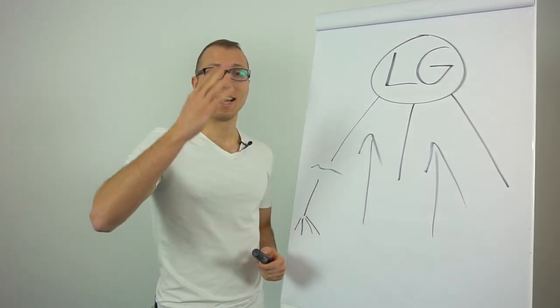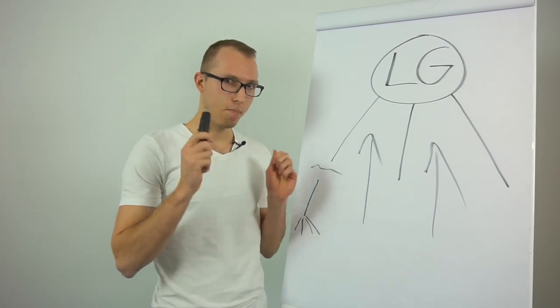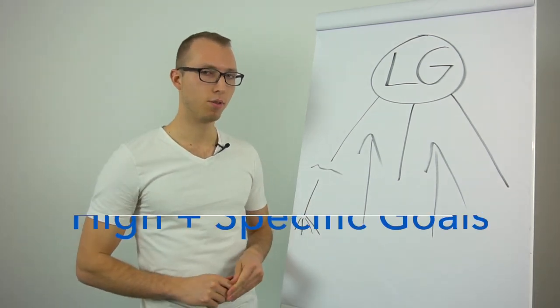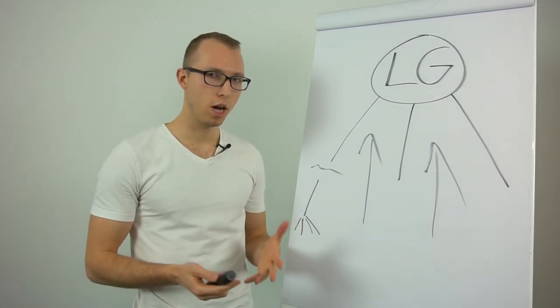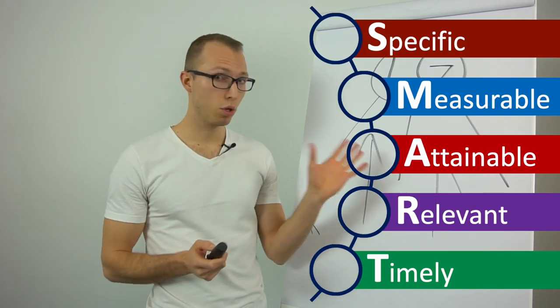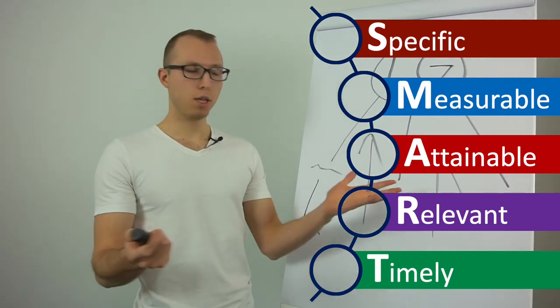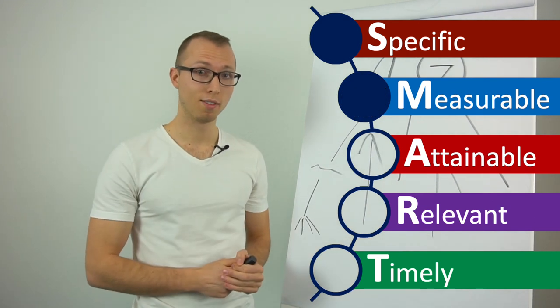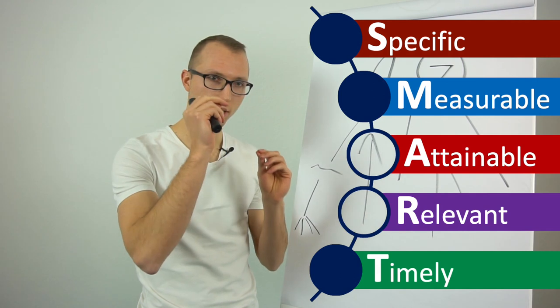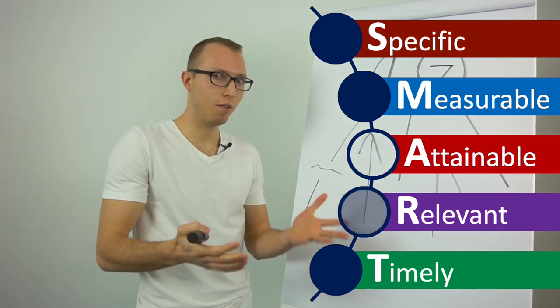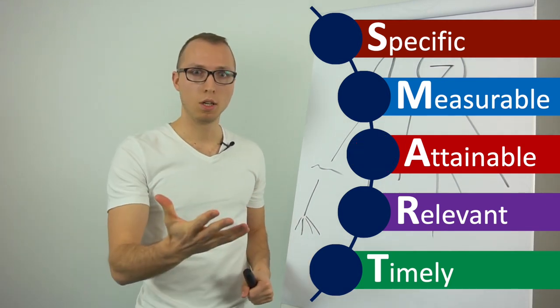And the fourth point is based on the goal setting theory by Locke, that the best performance happens if you set high and specific goals and this can be connected to the SMART method. If you don't know the SMART method just google it you will understand it in one minute. But here they talk about specific measurable goals.